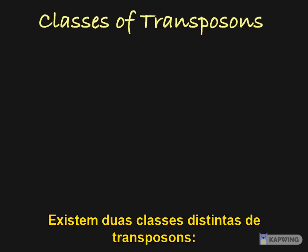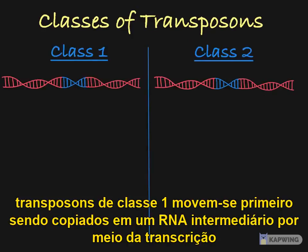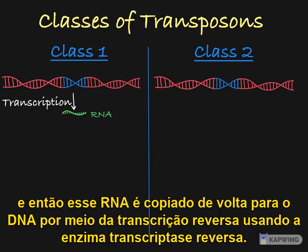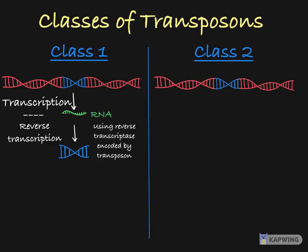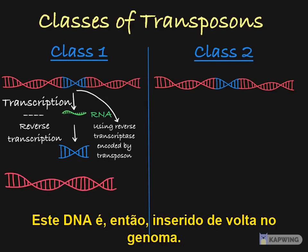There are two distinct classes of transposable elements. Class I transposons move by first being copied into an RNA intermediate through transcription, and then that RNA is copied back into DNA through reverse transcription using the enzyme reverse transcriptase. This reverse transcriptase is typically encoded by the transposon. This DNA is then inserted back into the genome.